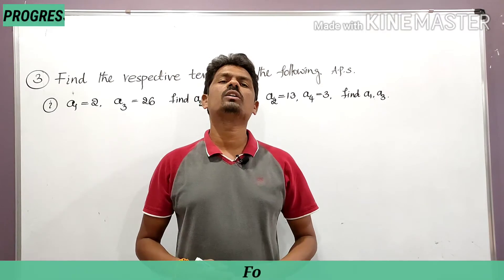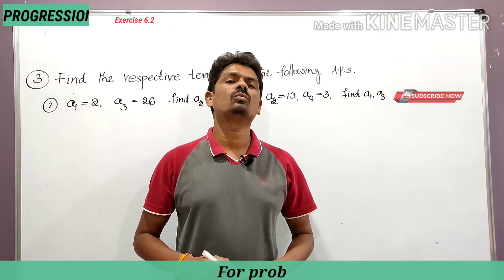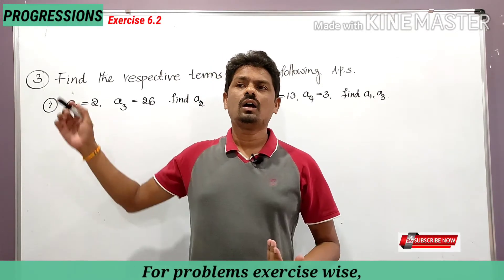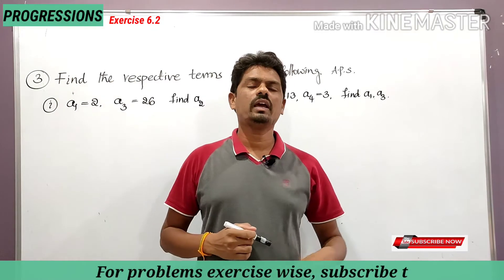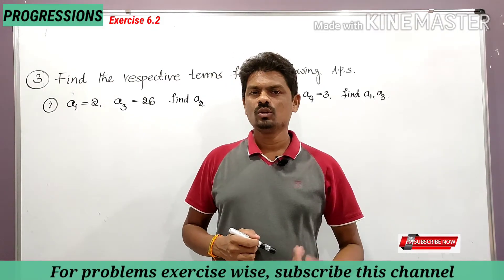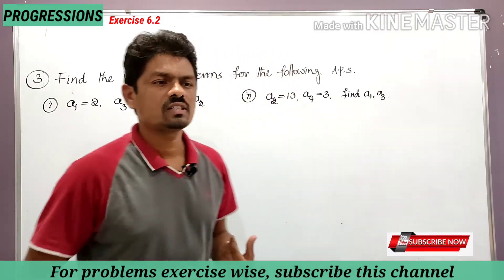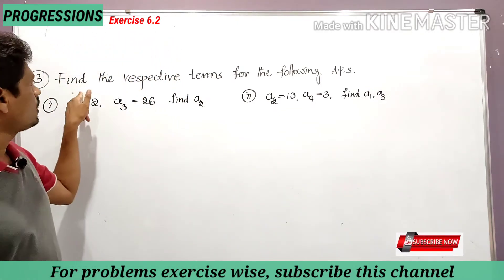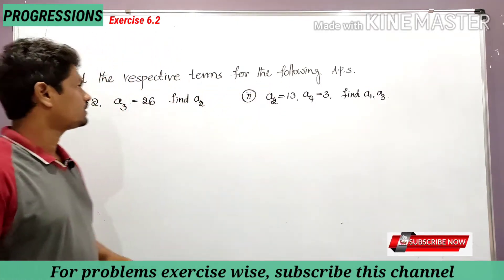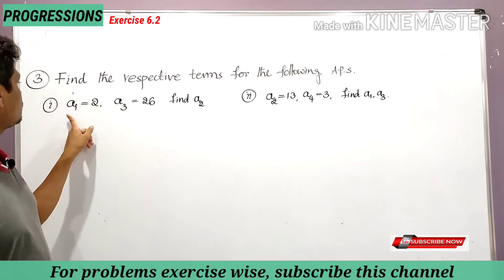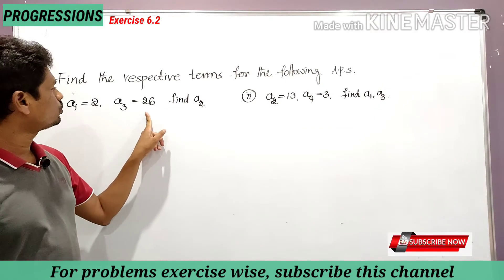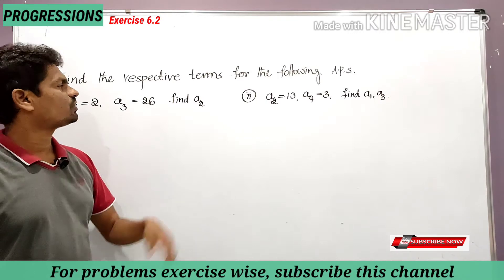Hello students, welcome to my channel Learn More Maths. I am Varukmar. Today we are going to learn Problem Number 3, Exercise 6.2. What he has given: find the respective terms for the following AP. First one: a1 is equal to 2, a3 is equal to 26, find a2.